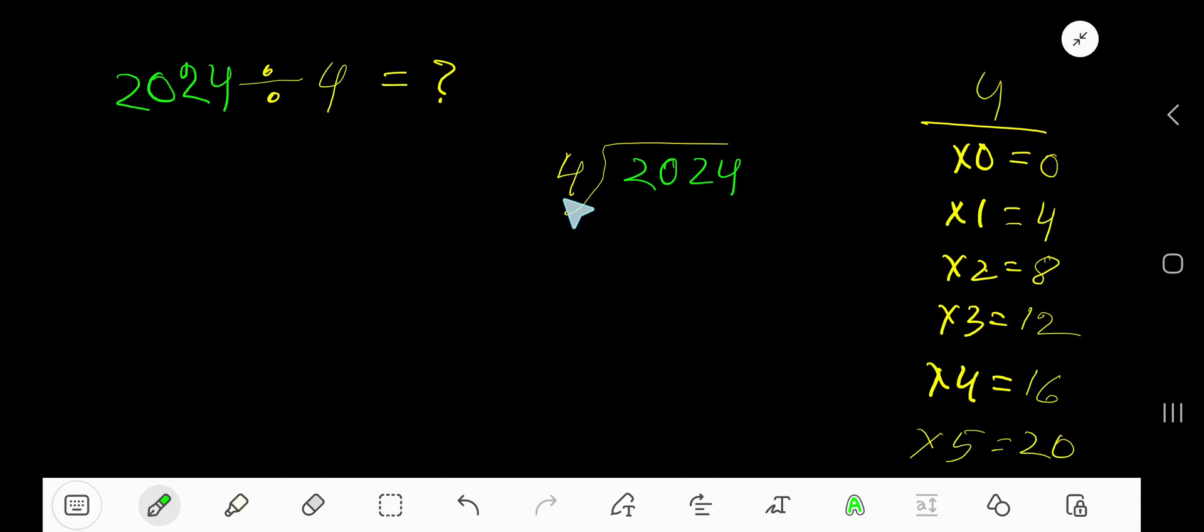2024 divided by 4. Here 4 is the divisor, so we need the multiplication table of 4. 4 times 0 is 0, 4 times 1 is 4, 4 times 2 is 8, 4 times 3 is 12, 4 times 4 is 16.